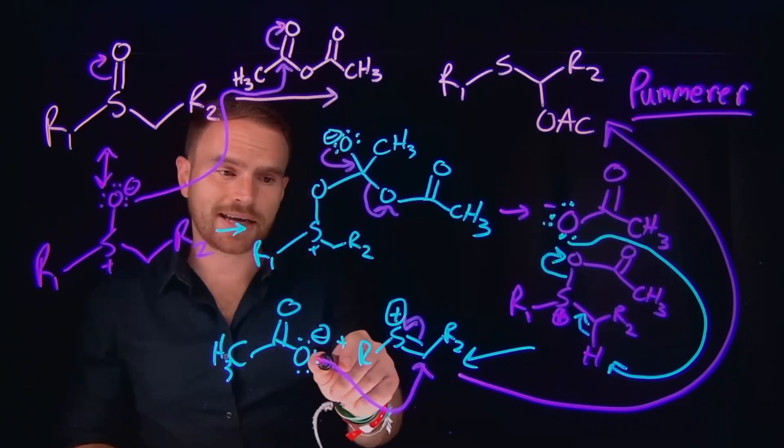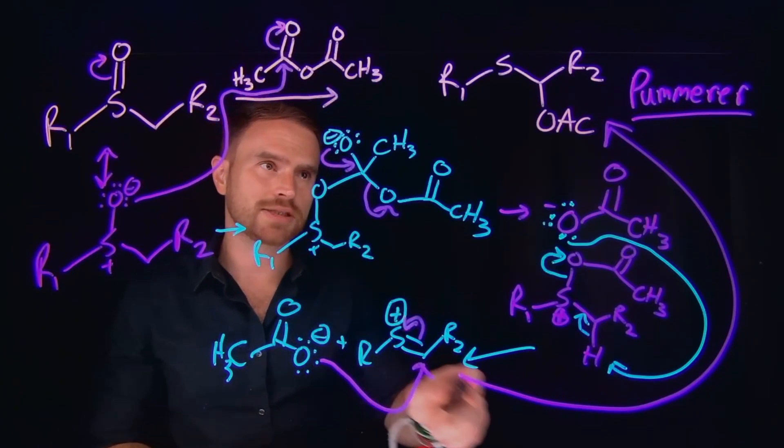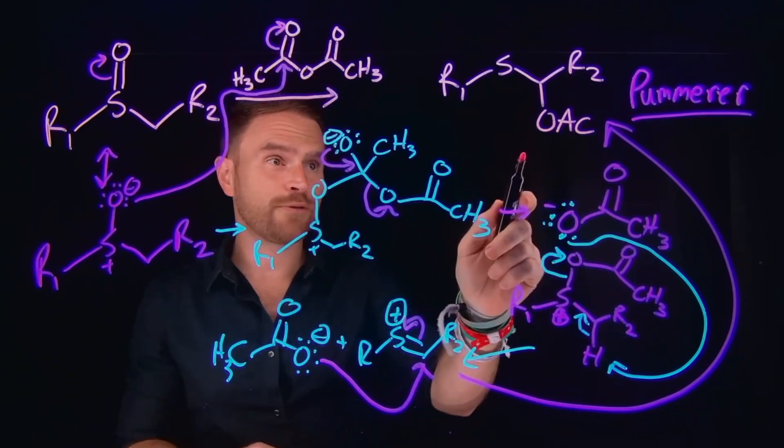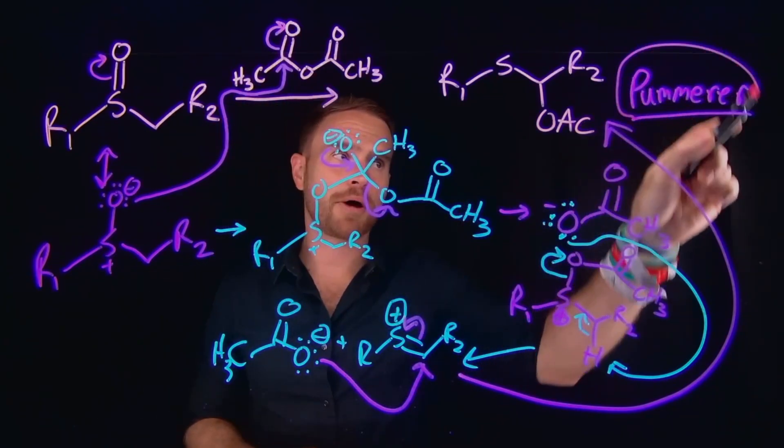Subsequently, the acetate group can come and attack that alpha carbon, kicking over the pi electrons to give us what's ultimately our alpha acyloxy thioether. And again, this is what's known as the Pummerer reaction.